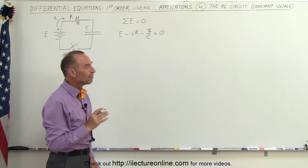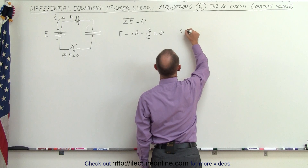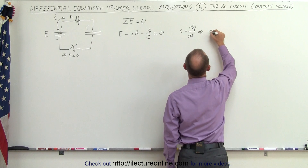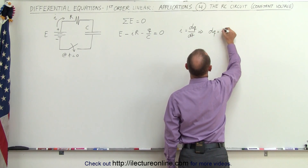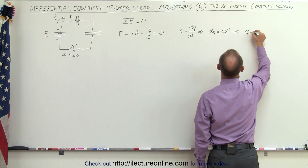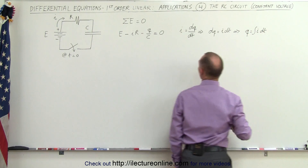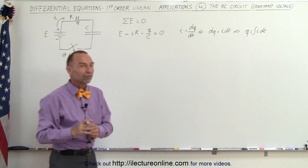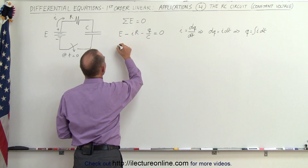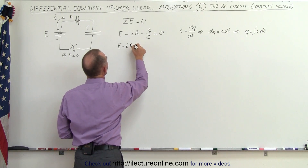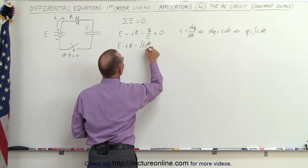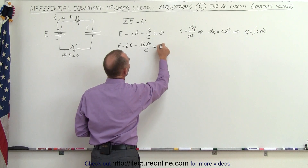Remember that Q can be found by saying that I is equal to DQ/DT, which means DQ is equal to I times DT, and integrating both sides gives Q equal to the integral of I DT. So since we want an equation as a function of I, we replace Q with the integral of I DT, giving us E minus I times R minus the integral of I DT divided by C equals zero.